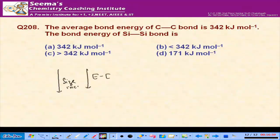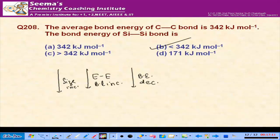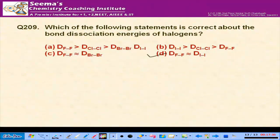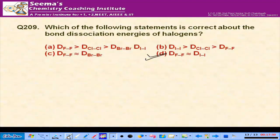Going down the group, bond length increases, so bond energy decreases — it will be less than 242. There is no exception in the carbon family. Exceptions exist in the nitrogen family and the oxygen family. Bond energy of chlorine is greater than bromine, which is greater than iodine, which is approximately equal to fluorine.